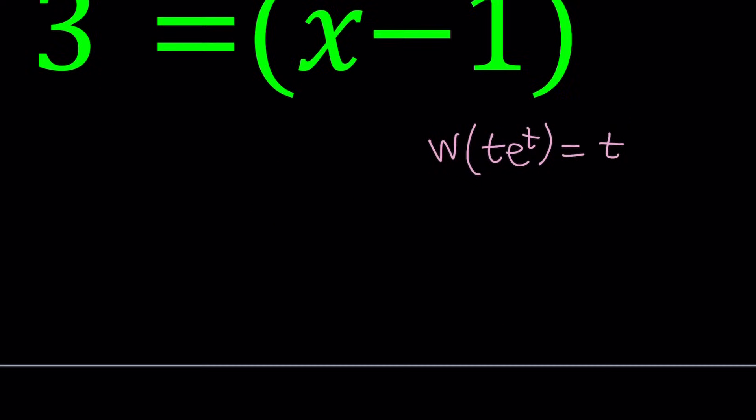If you invert this function you're going to get t times e to the t. But of course t times e to the t is not one-to-one, so you have to cut it at negative one and then you're going to have two branches, two pieces. If you want the details you can search for Lambert's W function.